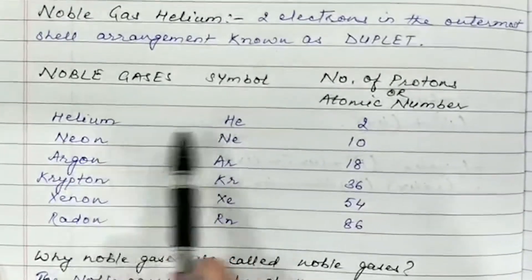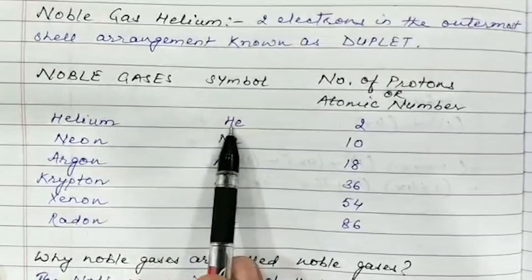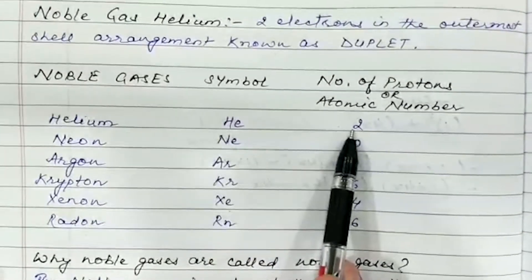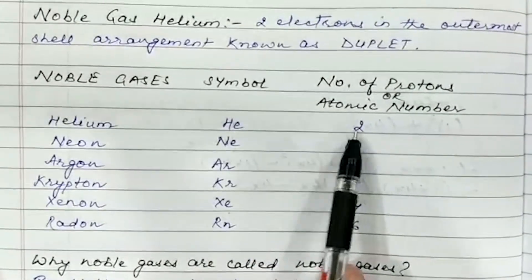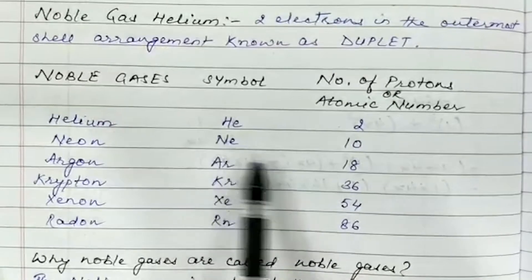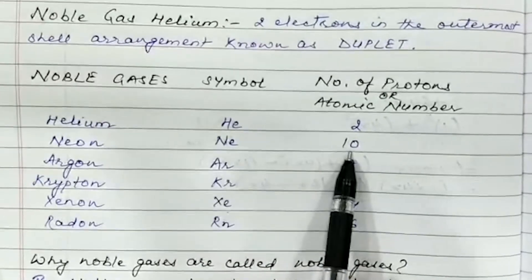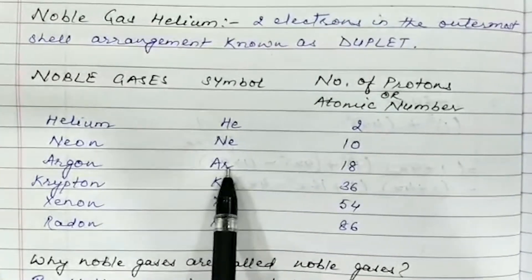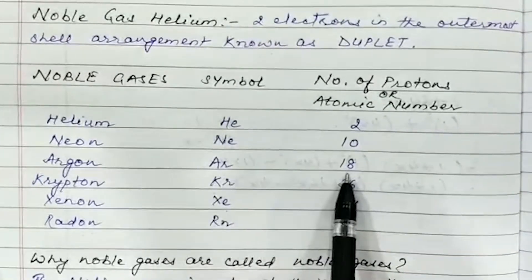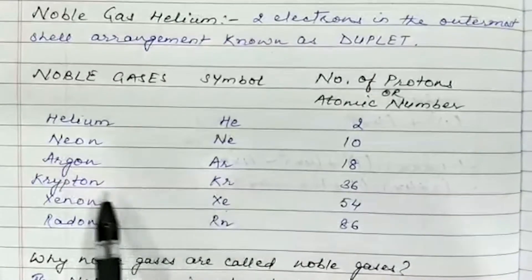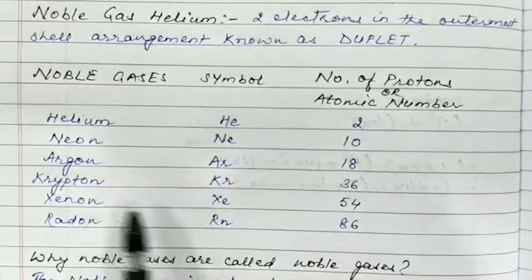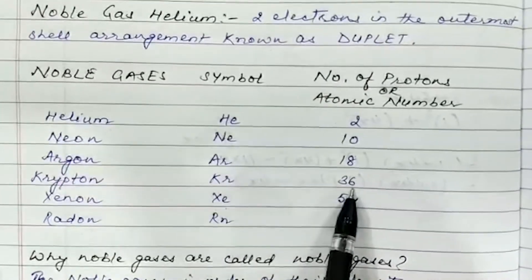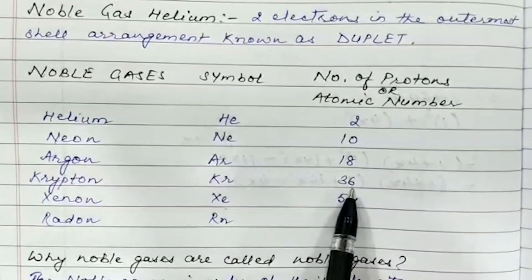The symbol of Helium is He, Atomic No. 2. Neon is Ne, Atomic No. 10. Argon is Ar, Atomic No. 18. Krypton is Kr, Atomic No. 36.